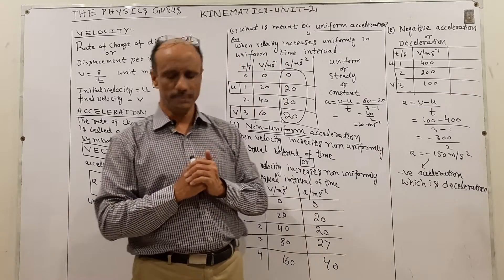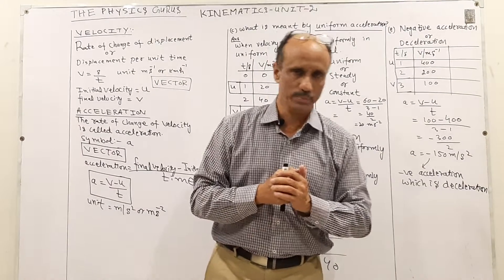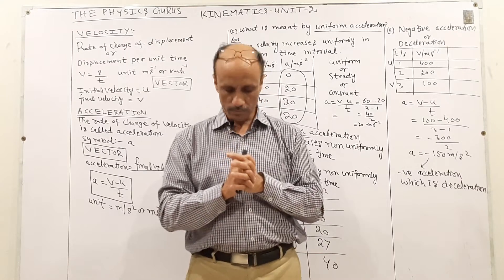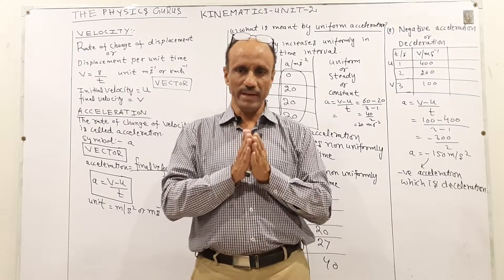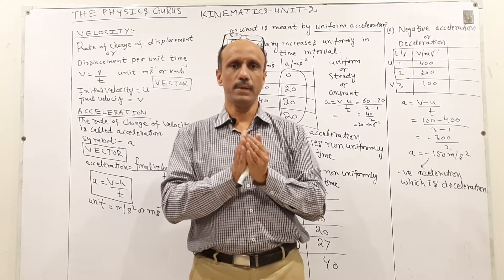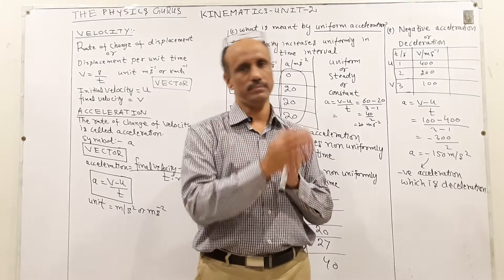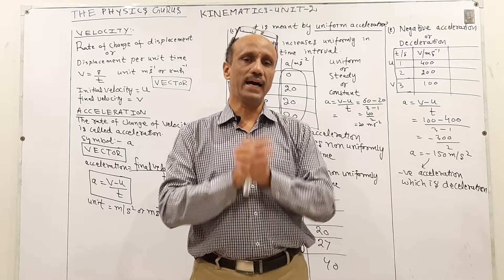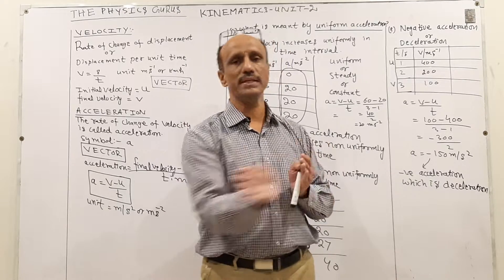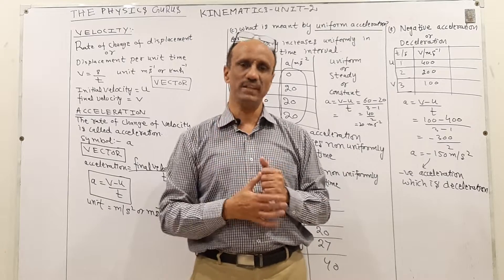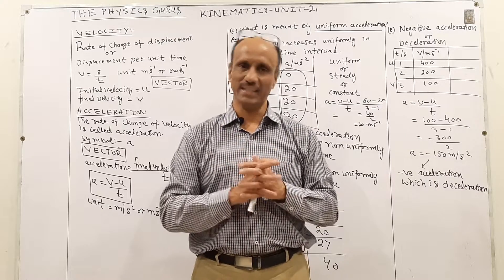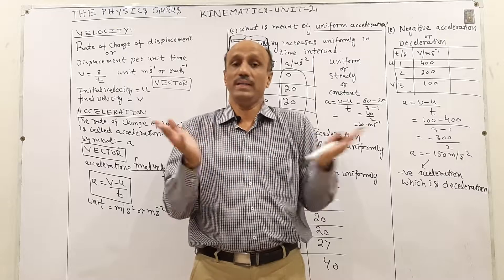Here is a question — write your answer in the comments: A car is traveling with a constant speed of 60 km/h but is continuously changing its direction in a zigzag path. Is there any acceleration? If yes, why? If there is no acceleration, why not? I am waiting for your reply in the comments.